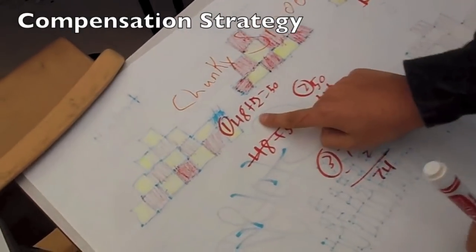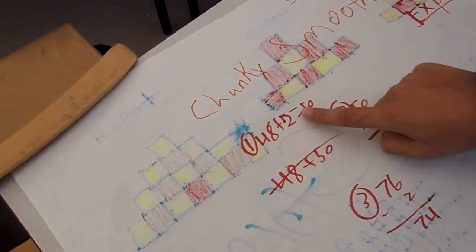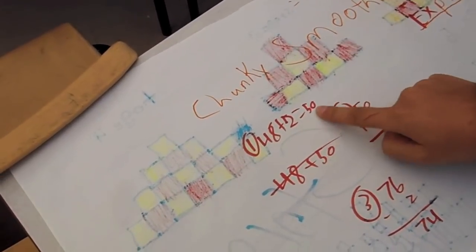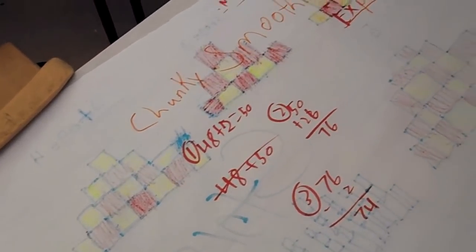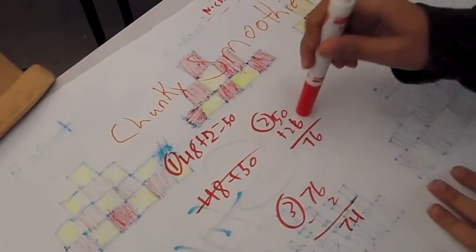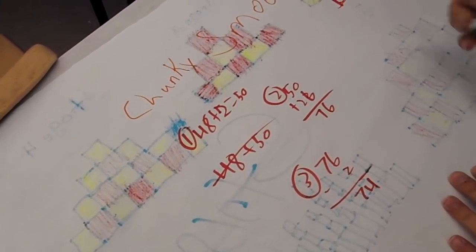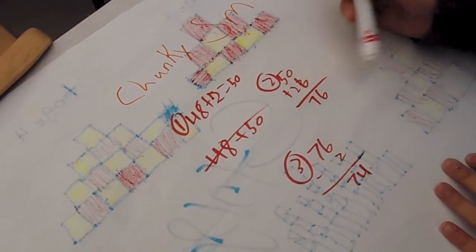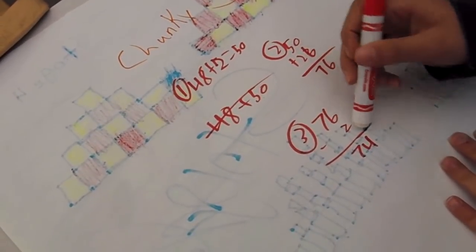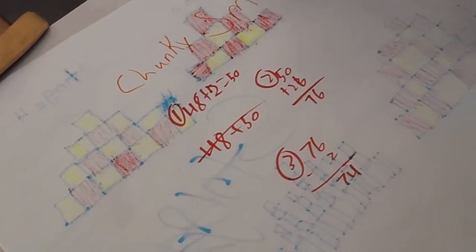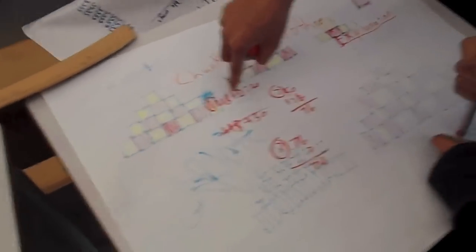We turned 48 into 50 because it's a friendly number, easier to add. So we did 50 plus 26. Because we added 2 before, we had to take our answer that we got, 76, and minus 2. That's brilliant.